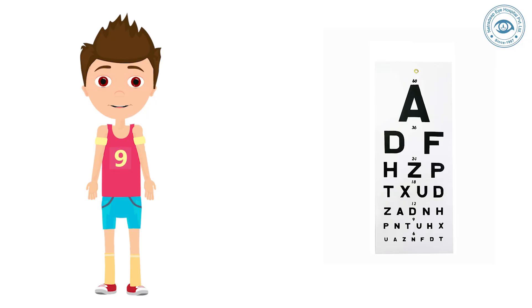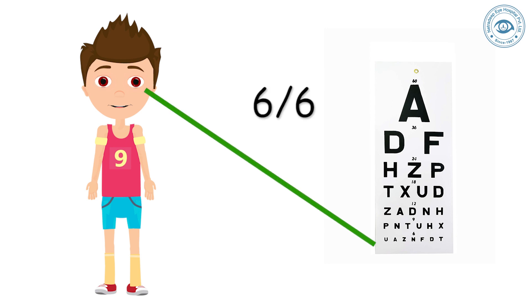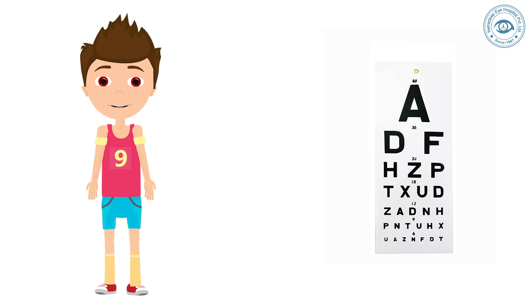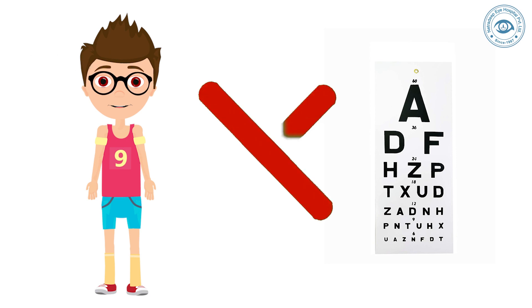To explain in simple terms, a normal individual can read up to 7 lines on a vision chart — that is normal vision 6/6 — but an amblyopic child cannot read all 7 lines even with a proper pair of glasses.